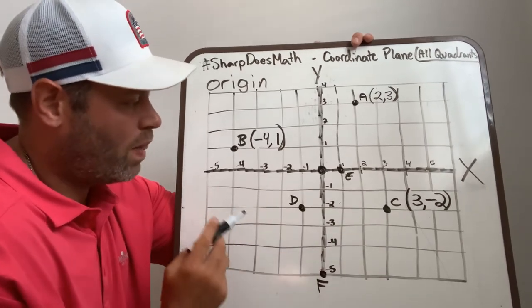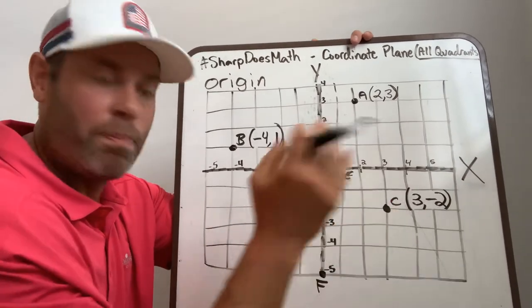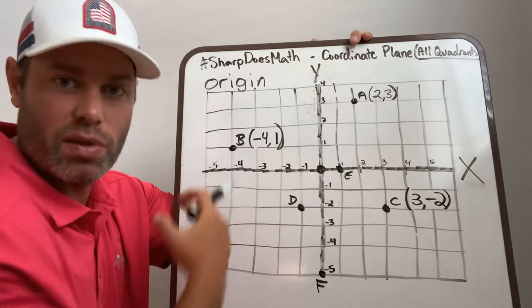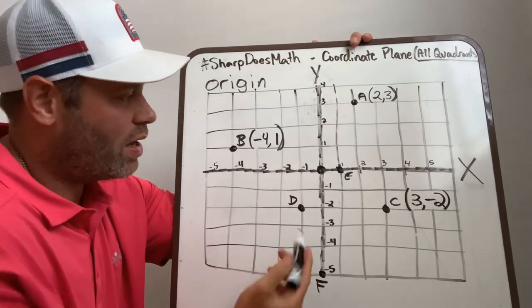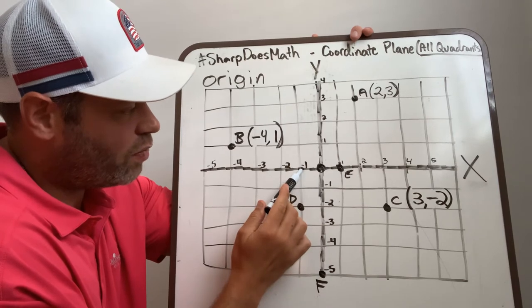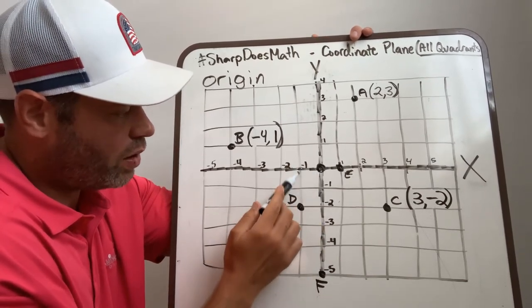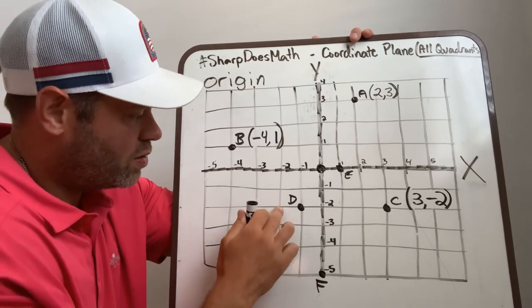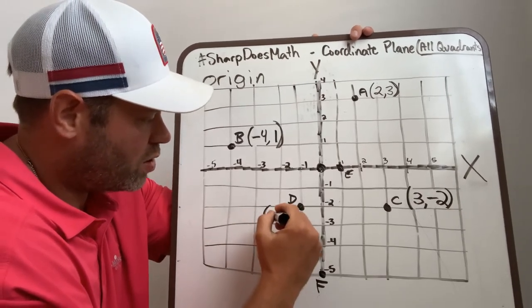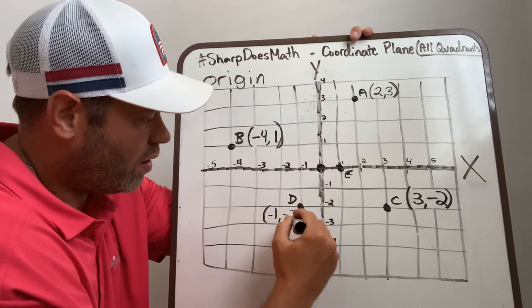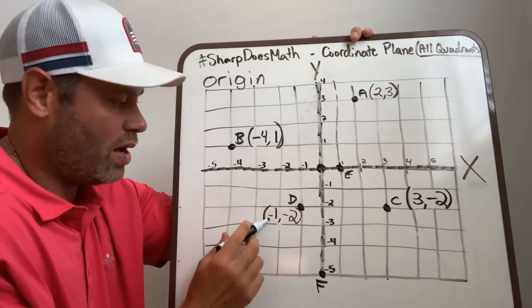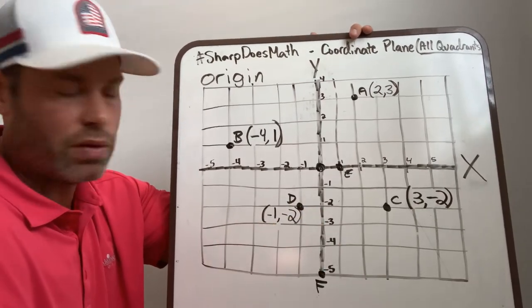Here's D. This is quadrant 3 where things are both negative. Starting at the origin, we went negative 1, and then we went to negative 2. So negative 1, negative 2. When I write that, you've got to make sure you put your negatives in on both numbers. Negative 1, negative 2.